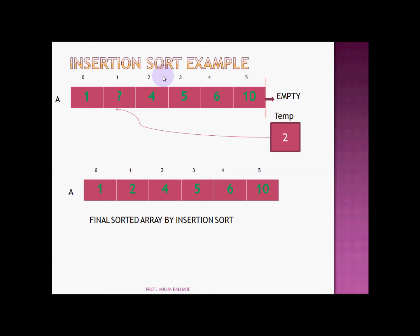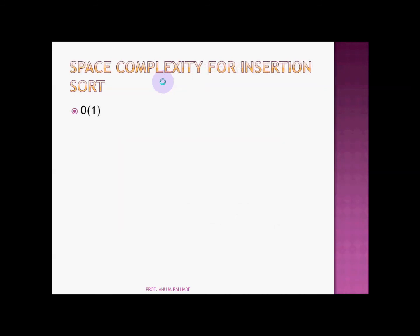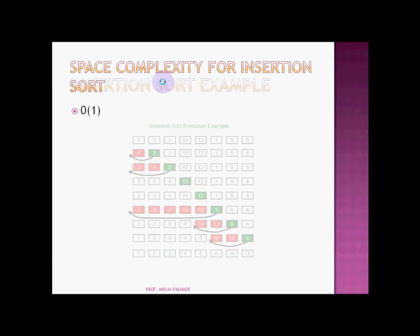Let's discuss the space complexity and time complexity of insertion sort. The time complexity in the best case is O(N). In the average case it is O(N²), and in the worst case it is also O(N²). The space complexity for insertion sort is O(1).